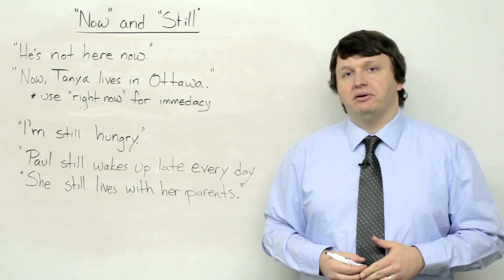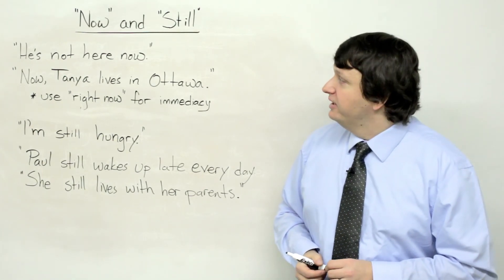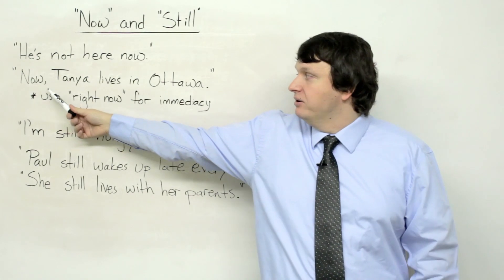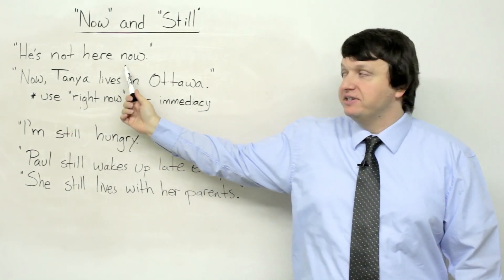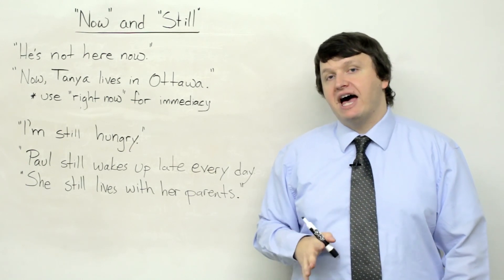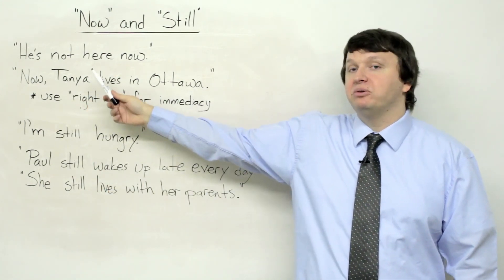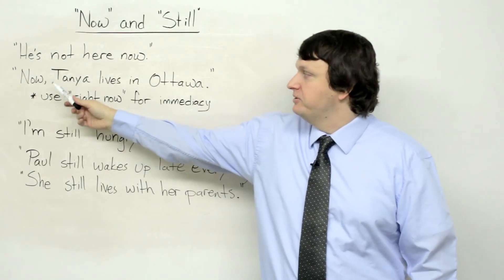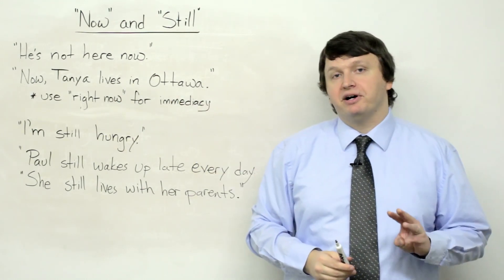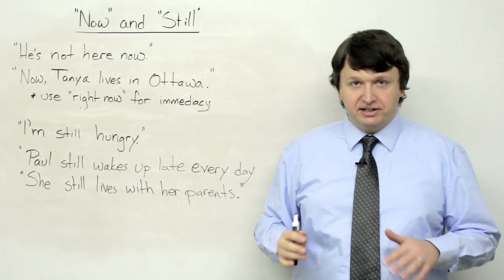So we can use 'now' to talk about the actions of a person or a thing in the moment. What we can do with 'now' is place it at the beginning of a sentence, like 'Now Tanya lives in Ottawa.' We can also put it at the end of a sentence, like 'He's not here now.' And it's also possible, if we don't have the verb 'to be,' to place 'now' before the verb. So we can say: 'Now Tanya lives in Ottawa,' 'Tanya now lives in Ottawa,' or 'Tanya lives in Ottawa now.' So you have three possibilities — same applies to the other example: 'He's not here now,' or 'Now he's not here.'